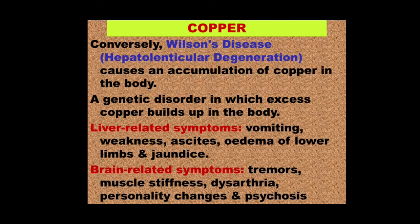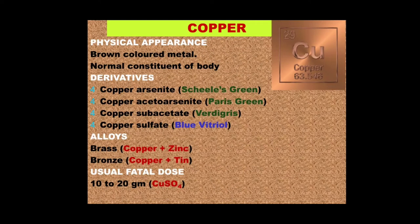Copper is a brown-colored metal and a normal constituent of the body. A number of derivatives are important in toxicology: copper arsenide, called Scheele's green; copper aceto-arsenide, called Paris green; copper sub-acetate, called verdigris; and copper sulfate, called blue vitriol. The first three are greenish in color — different shades, very nice to look at. Copper sulfate is a brilliant blue. Each one of these is, however, very toxic.